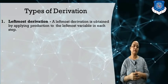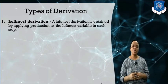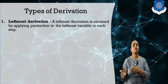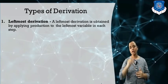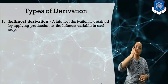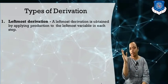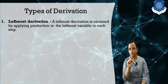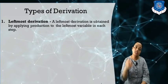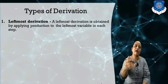What is a leftmost derivation? A leftmost derivation is obtained by applying the production to the leftmost variable in each step. If in each step you are always expanding the leftmost non-terminal first, we call this the leftmost derivation.